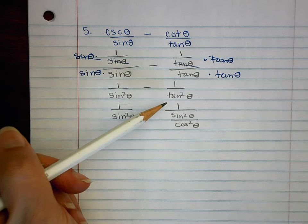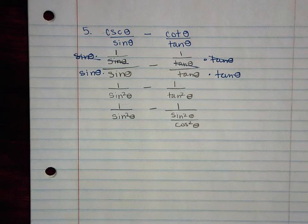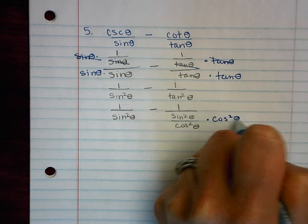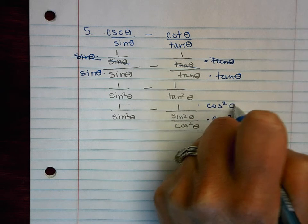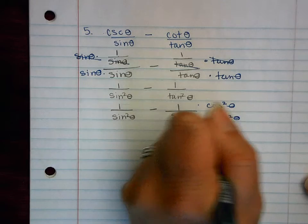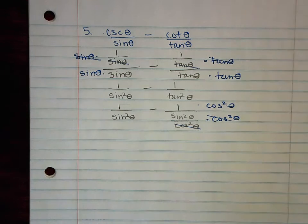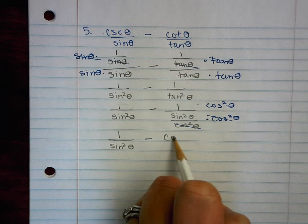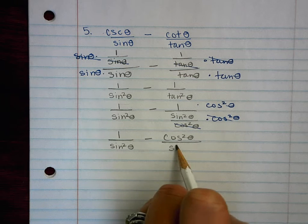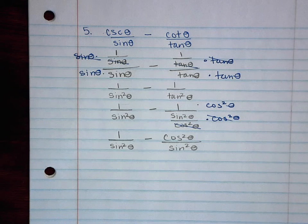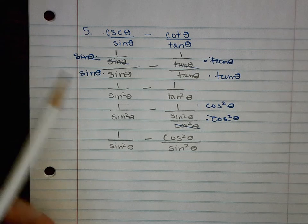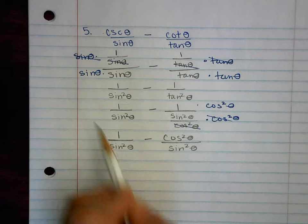All I did was replace tangent squared with sine squared over cosine squared, so I have a complex fraction again. Now I'm going to clear my denominator by multiplying by cosine squared on the top and the bottom, and here this will cancel. Now I have a common denominator, and because I have that common denominator, I'm going to go ahead and subtract — subtract the top and leave the denominator alone.